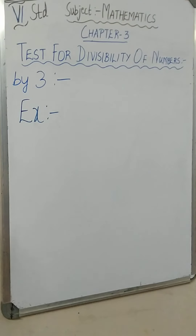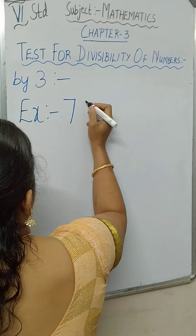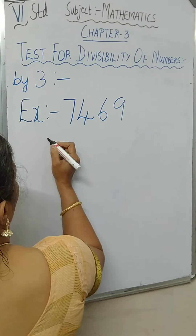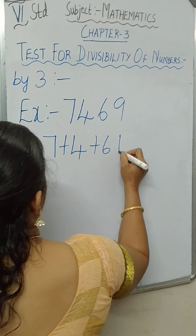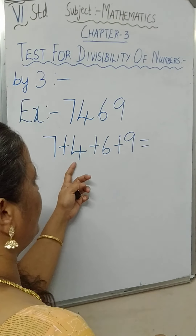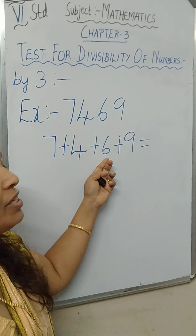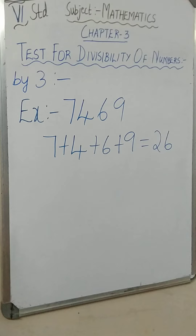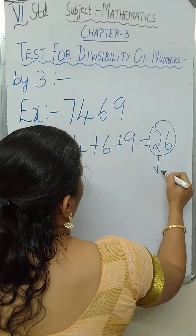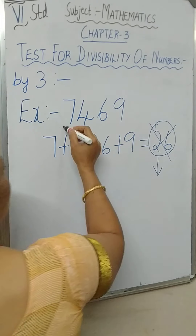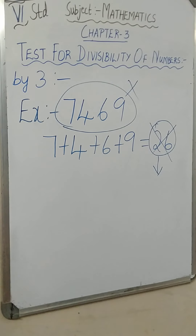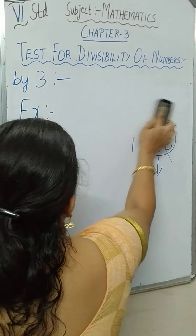Let us see another example. Suppose you take 7,469. Let us add all the digits: 7 plus 4 plus 6 plus 9. 7 plus 4 is 11, 11 plus 6 is 17, 17 plus 9 is 26. Is 26 a multiple of 3? No, it is not a multiple of 3. So this number is not divisible by 3. That is the rule for divisibility by 3.